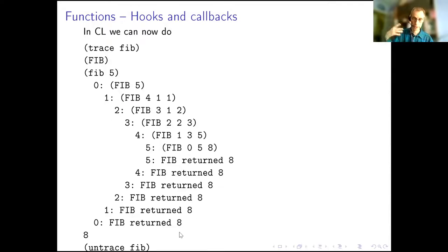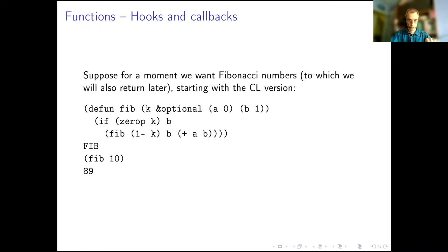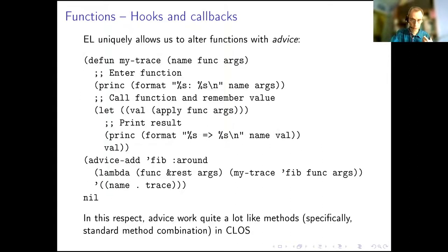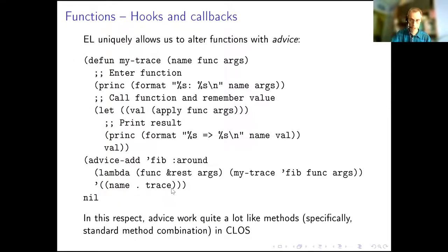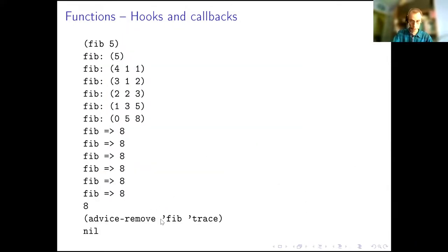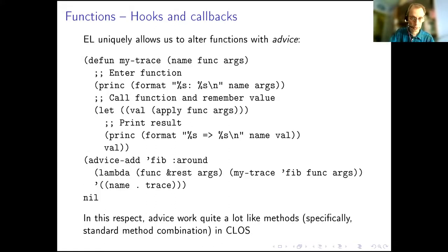The output shows returned values — every recursive call returns 8, which gets passed back as the final value. Then I call advice-remove using the name I gave it — in the alist, name dot trace — and it looks up that name and removes it. The function is now untraced. This is a cheap and cheerful way to build traces into Emacs and debug your functions. For a long while I thought Emacs didn't really have traces at all.